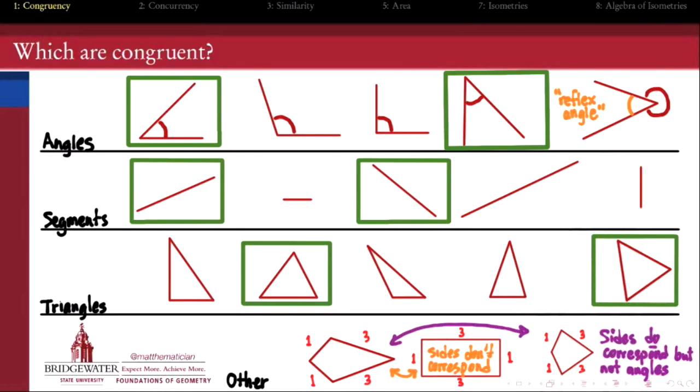And before we move off of this topic, when we think about congruence, we often think about what is the same between a pair of geometric objects, between a pair of angles, between a pair of segments, triangles, and so forth. But for a moment, let's dwell on the question, what might be different in between two congruent figures? It's kind of a silly sounding question at first.